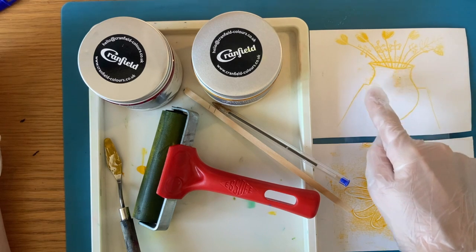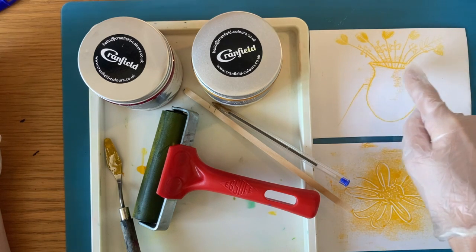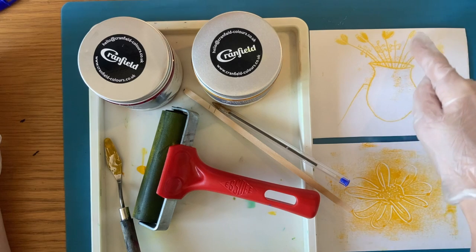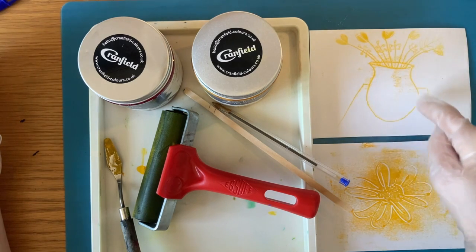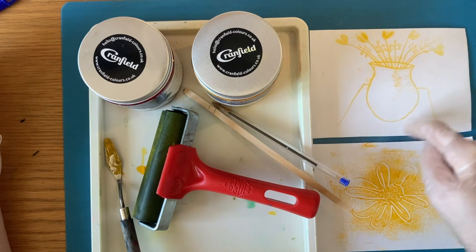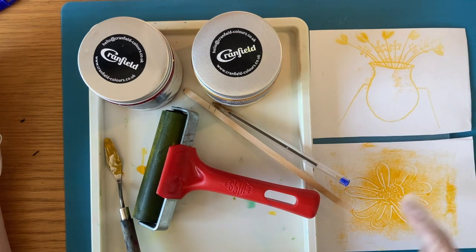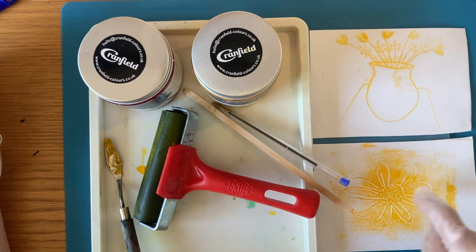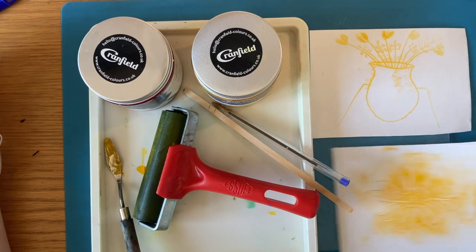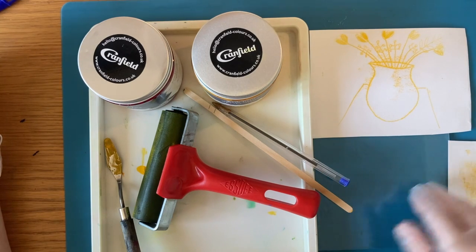One of them, you'll see in this example, the line is created where the paint is, where the paint is on the paper. And I'll show you how we do this sort of print. Another type is where the line is where the paint isn't, you create the line by the gap in the paint. So they're two different types of monoprints that you can produce.